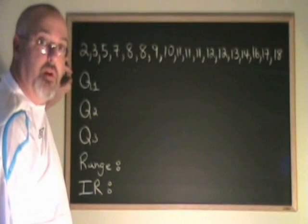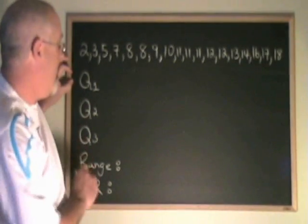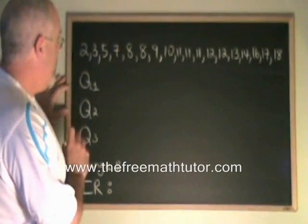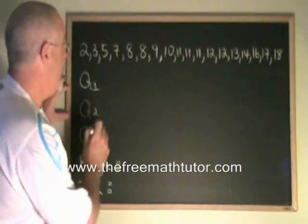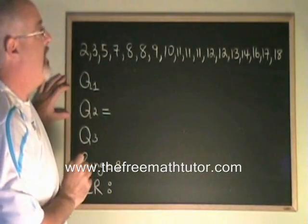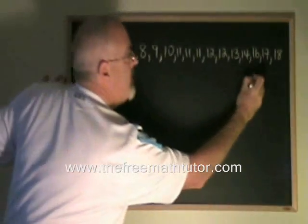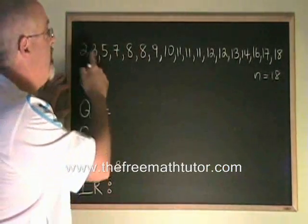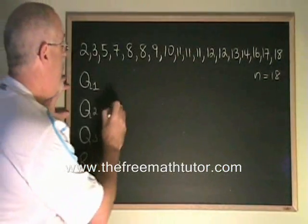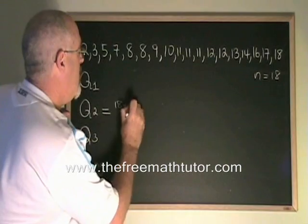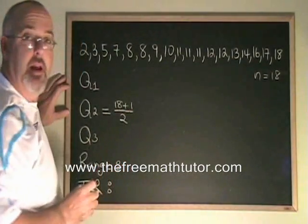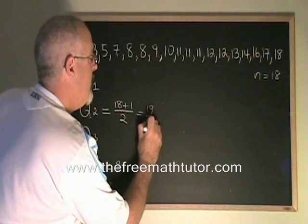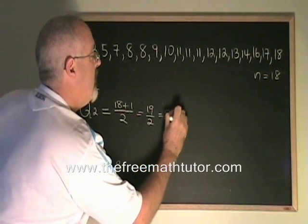In order to find interquartile range, you need to know your Q1, Q2, and Q3 for your data. Q2 is the median. We take the n number of our data, which in this case is 18. I have 18 numbers here. And we put 18 plus 1 over 2. That's the n plus 1 over 2 formula equals 19 over 2, equals 9.5.